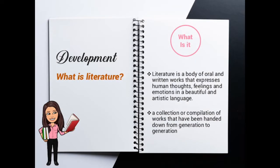What is literature? Literature is a body of oral and written works that expresses human thoughts, feelings, and emotions in a beautiful and artistic language. To clarify this definition, let us take a look at some of the significant words in this definition.